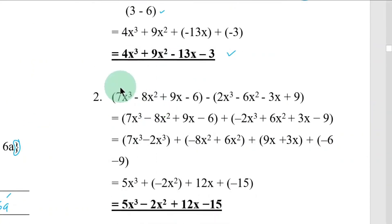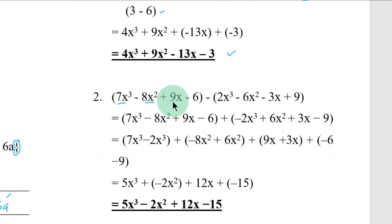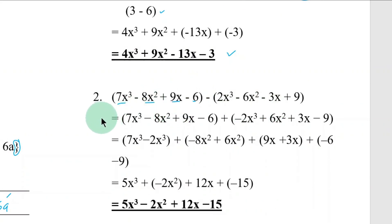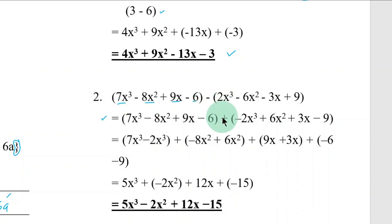For number 2, we have four terms. Looking at the second line of the solution — this actually came from the book — addition was performed here, since this one involves subtraction. Even without the second line, you can proceed directly.